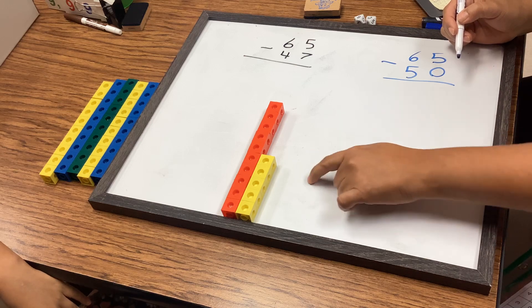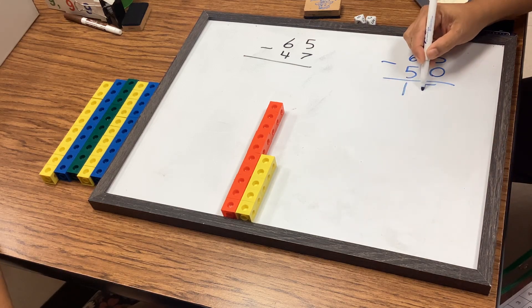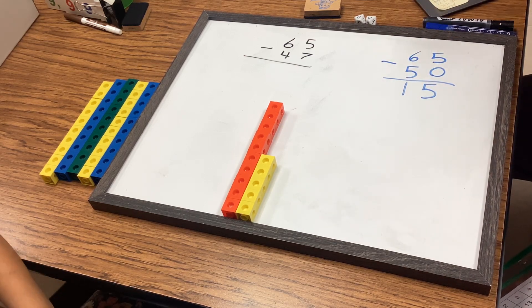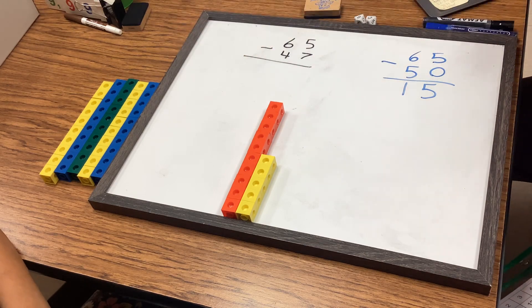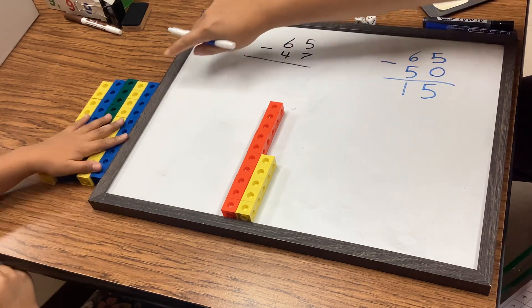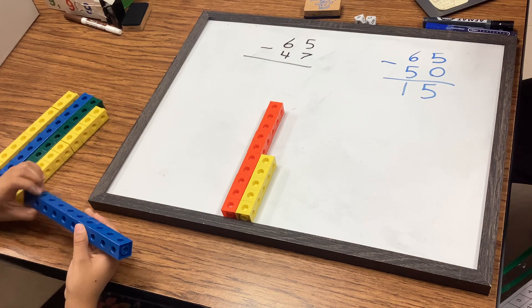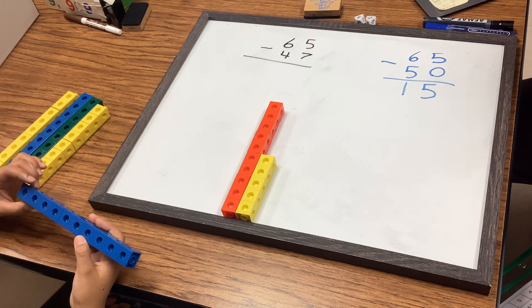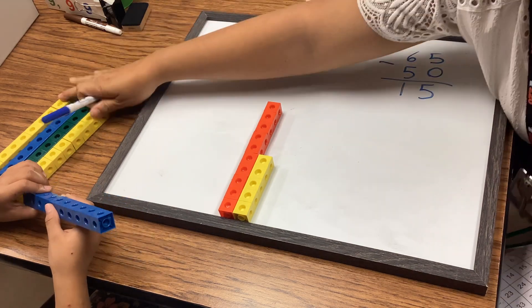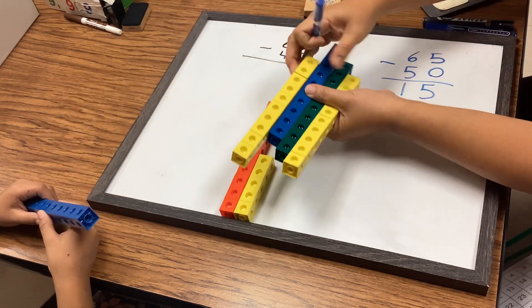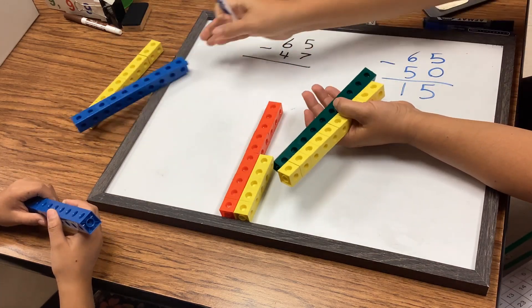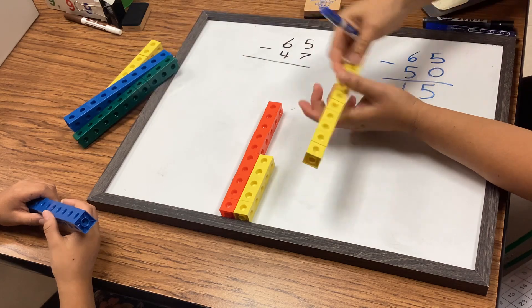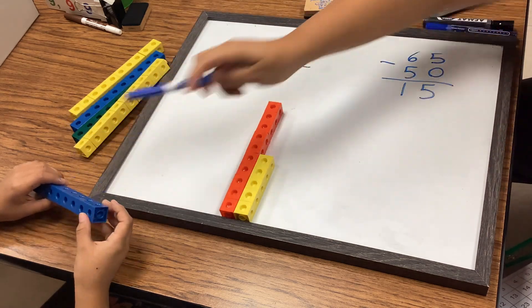So now please go ahead and take your 47, take away your 47. So you take 10, 20, 30, 40, 7 from here.